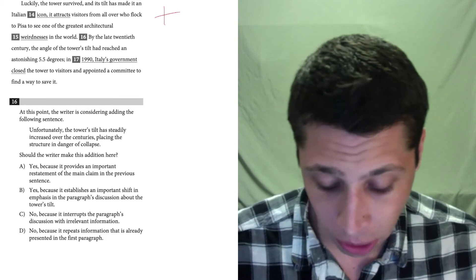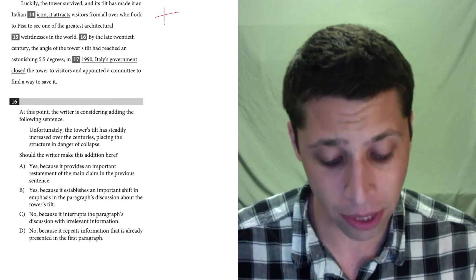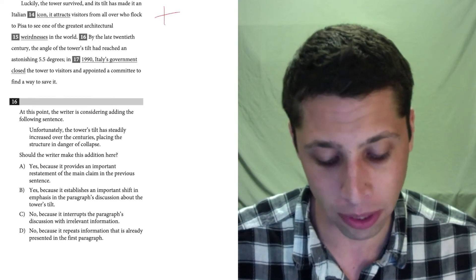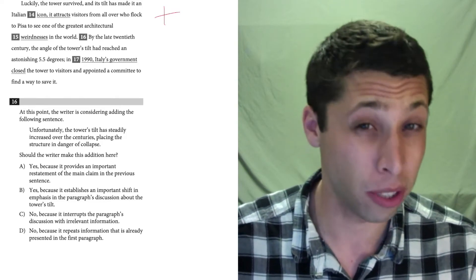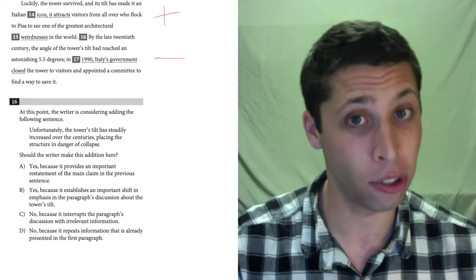By the late 20th century, the angle of the tower's tilt had reached an astonishing 5.5 degrees. In 1990, Italy's government closed the tower to visitors and appointed a committee to find a way to save it. Because they're closing the tower, they need to save it. That sounds bad. So there's a little bit of a transition here.